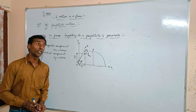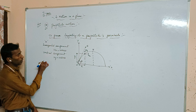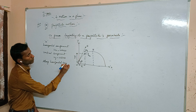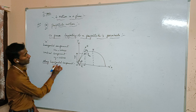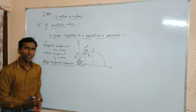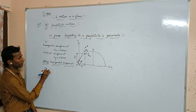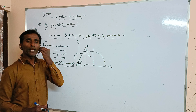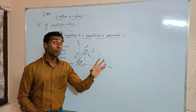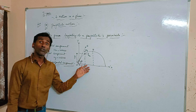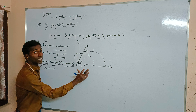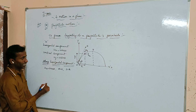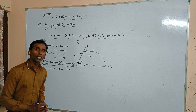First of all we take the horizontal component — how it will behave along horizontal. Along the horizontal component, ux = u cos theta and along the horizontal direction there is no acceleration, because the body is travelling with uniform speed. Uniform speed means there is no acceleration along the horizontal direction, so we take a = 0 and s = x. Now we apply the kinematic equation s = ut + ½at².